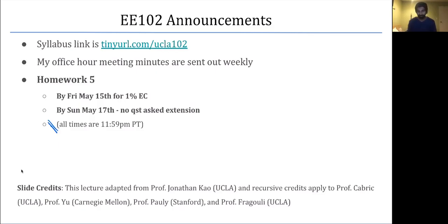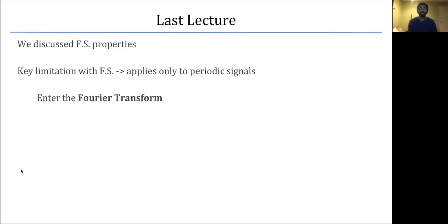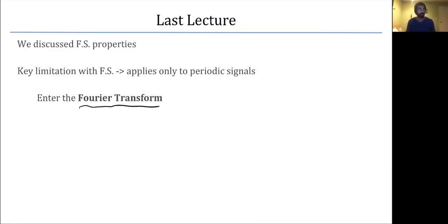In the last lecture we discussed the Fourier series properties. The key limitation of the Fourier series is that it was designed for periodic signals, but most real-world signals that are interesting are aperiodic. If we want to apply a similar analysis — splitting an aperiodic signal into a summation of sines and cosines — we need a new mathematical formalization, known as the Fourier transform. It's basically an extension of the Fourier series for aperiodic signals.